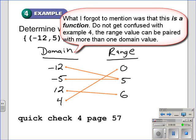The way to determine using the mapping if this is a function or not, is negative 12, you can see it's only going to one number, so it's paired with only one number. Negative 5, it goes to 5, only one number. And we can see there's only one arrow leaving it. Same with 12, only one arrow leaving it. 4, only one arrow leaving it.